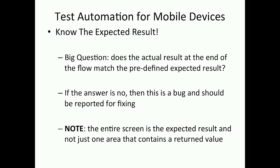Know the expected result — what is your software supposed to do? You have to code your test so the actual result matches the predefined expected result. If no, then you have a bug and report it. And also keep in mind that the entire screen itself is the expected result — not just the one thing you want, but the whole screen is the actual result.